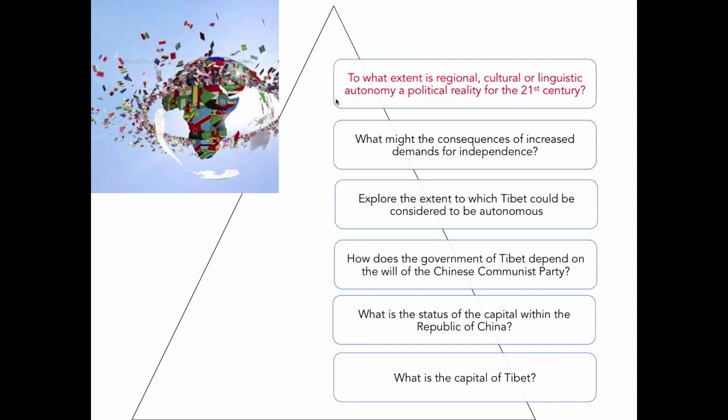We then move towards the next highest level, looking at synthesis — 'What are the consequences of increasing demand for independence?' In this particular setting you're not even talking about Tibet specifically; we're talking about a synthesis of ideas and information drawn from a whole range of different places.